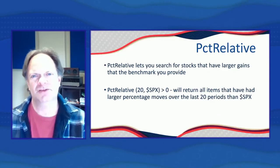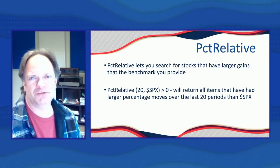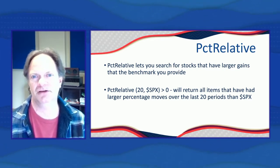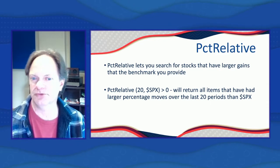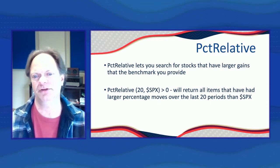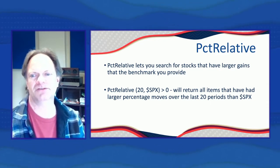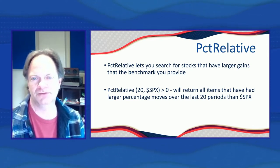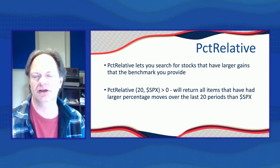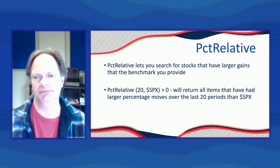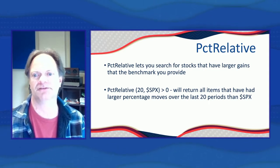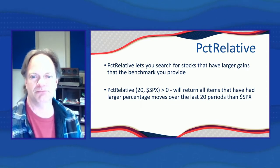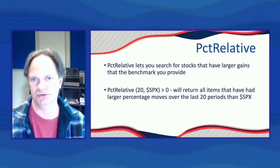The first one we're going to look at lets you compare against an index or whatever other symbol you'd like. You can see we've got percent relative 20 $SPX greater than zero, and what that allows us to do is say over the previous 20 time periods — whether days, months, or weeks — find me things that have gone up more than SPX. That by itself is a really powerful thing, but we've added a couple of enhancements to make it even more useful.